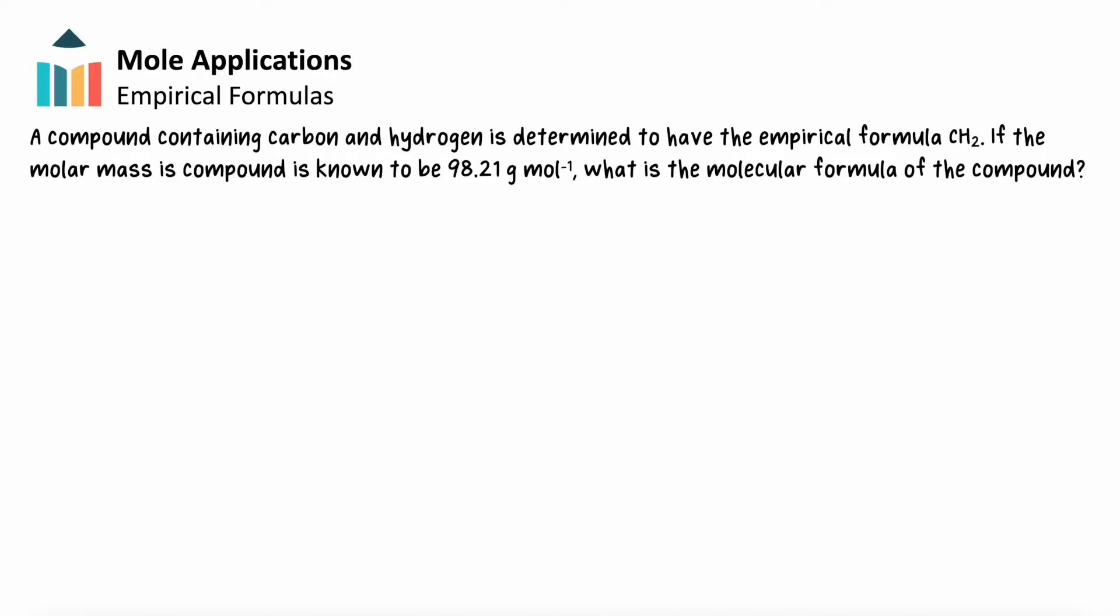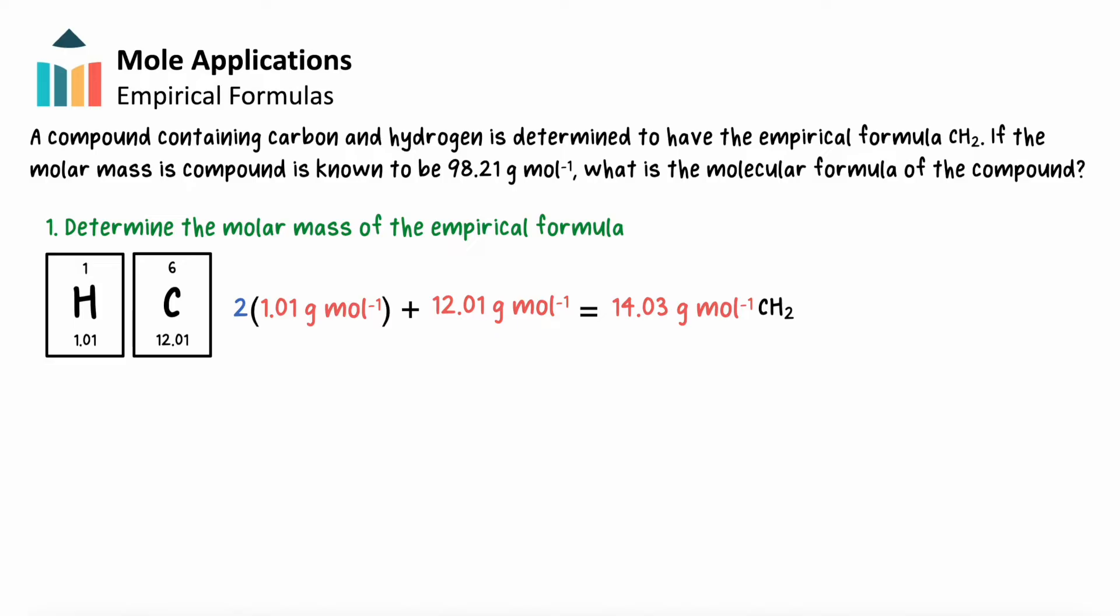To relate an empirical formula back to a molecular formula, we'll first need to determine the molar mass of the empirical formula. We'll add together the molar masses of each atom of each element based on the values found on the periodic table. Then, we'll compare the empirical mass to the molecular mass. If we divide the molecular mass by the empirical mass, we see that it is 7 times the size.